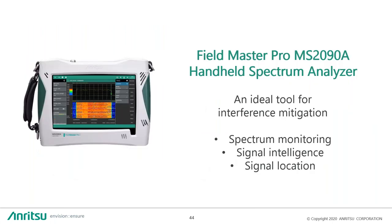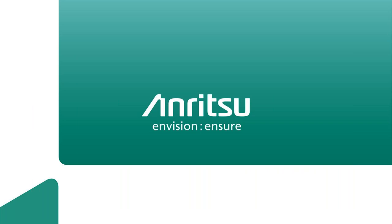The message is that the Fieldmaster Pro is an ideal tool for interference mitigation. It can be utilized in all three stages: spectrum monitoring, signal intelligence, and signal location. Those are all the slides I have — I think we can go ahead and open it up for questions.